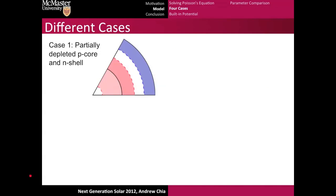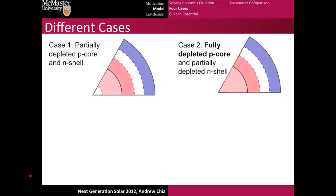Now, that's all fine and dandy, however, this calculation really only works in a specific case, where you have a partially depleted P-core and a partially depleted N-shell. But you could have, for example, a fully depleted P-core and a partially depleted N-shell. Or you could have a fully depleted N-shell and a partially depleted P-core. Or you could have a combination of case two and three, and you get case four, where the entire thing is fully depleted.